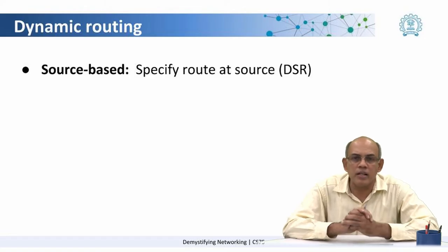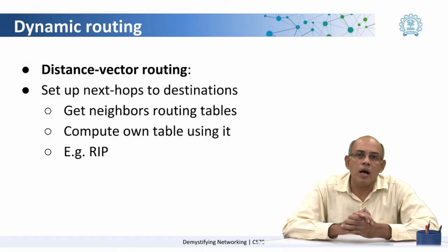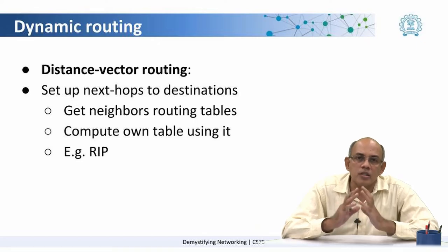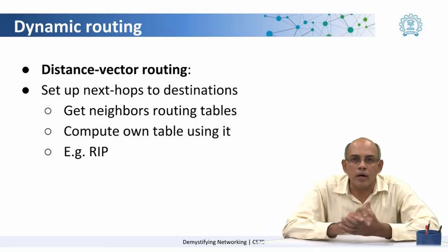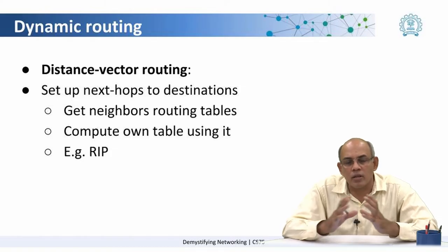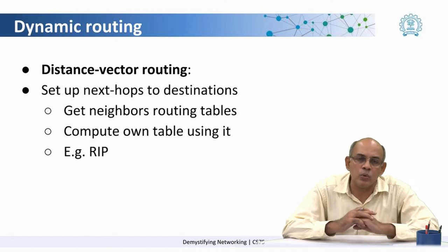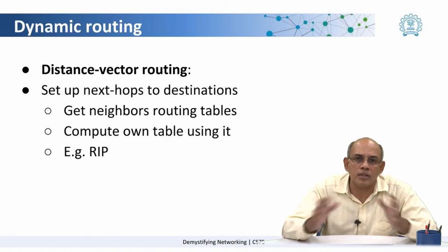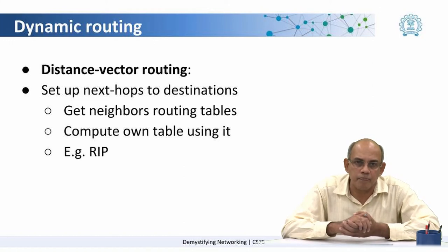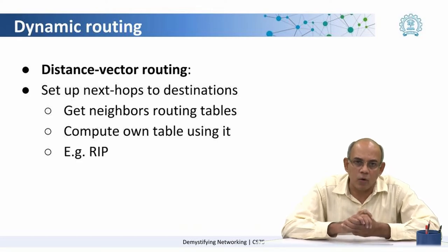But we will not be getting into details of these algorithms. Another mechanism is to specify the next hop to the route, wherein each router has a picture of what links it is connected to and what are the hops to different destinations. This is called distance vector routing.